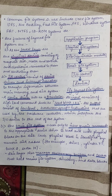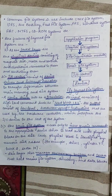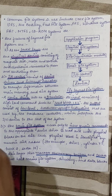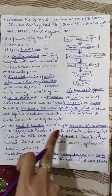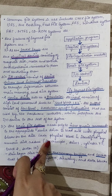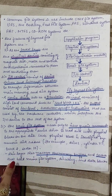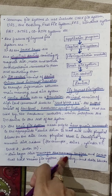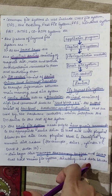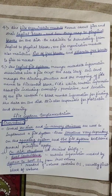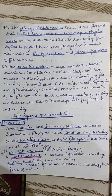The basic file system generates generic commands to the appropriate device driver to read and write physical blocks on the disk. It is related to the physical blocks — where the file is actually present or stored. Each physical block is identified by a numeric disk address. This layer also manages memory buffers and caches that hold various file system directories and data blocks.